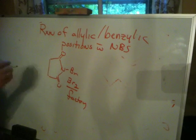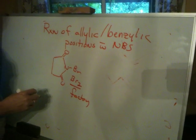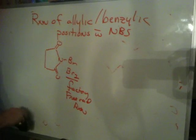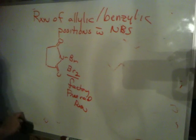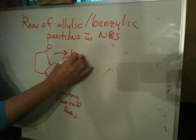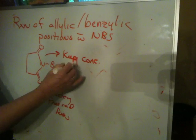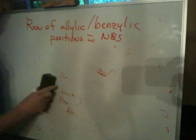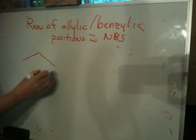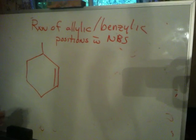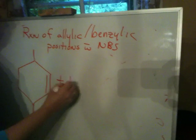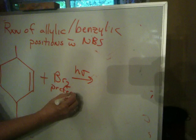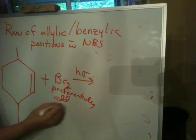What this means is that it essentially produces bromine, and the bromine can be used in a free radical reaction. The reason you use NBS is to keep the concentrations of Br2 low. So if you have a structure like this and you add Br2 and light, the problem is the bromine will preferentially add in a conventional way to the double bond.